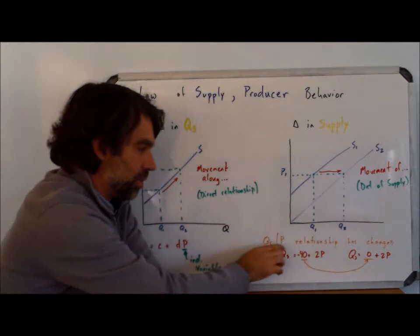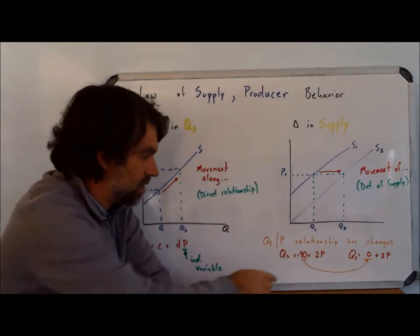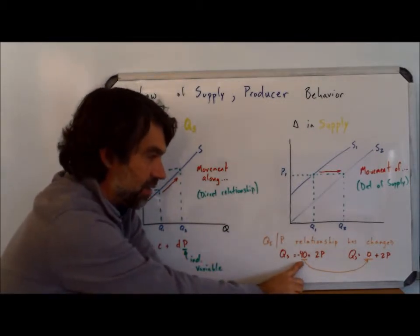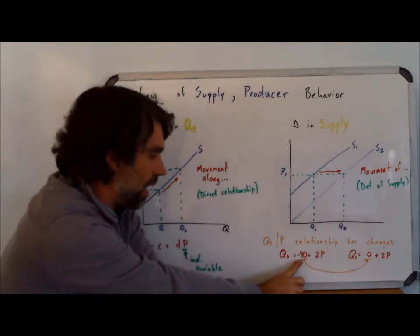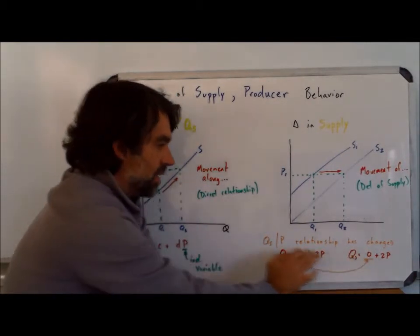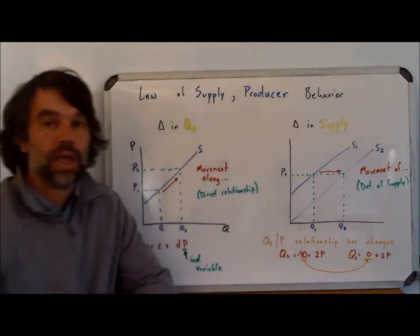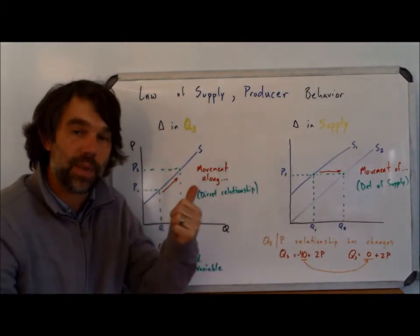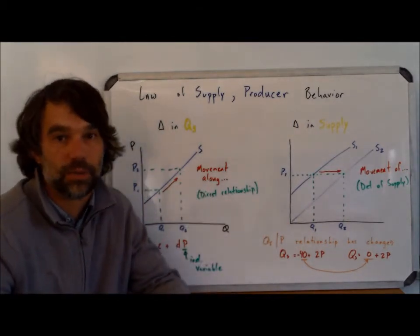So again, the relationship between price and quantity supplied has changed, and we see this by a change of what is the C variable. C variable went from negative 40 to zero. We know it's zero because it's coming from the origin. Any questions or comments, check out my other videos or post comments below.